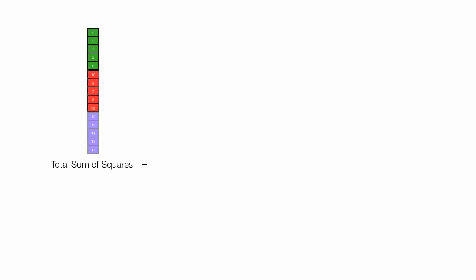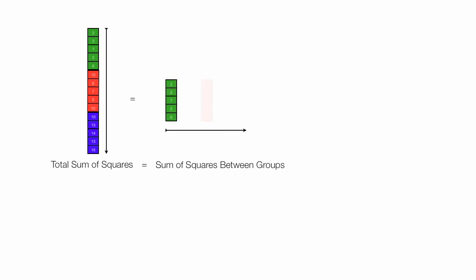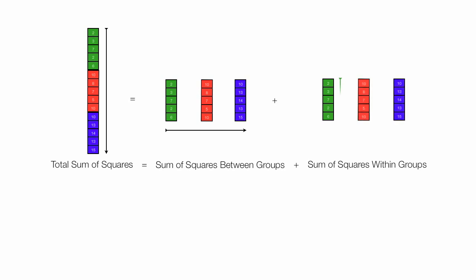Total Sum of Squares is taking all the samples and treating them as one large sample, and we will calculate that. This is equal to Sum of Squares between groups, which is looking at the variance between the groups. And finally, we'll calculate Sum of Squares within groups, and that's looking at the variation or variance within a group itself. I'm only going to show you how to calculate in Excel Sum of Squares within groups and also Total Sum of Squares, because if I can make these two calculations, I can figure out Sum of Squares between groups.